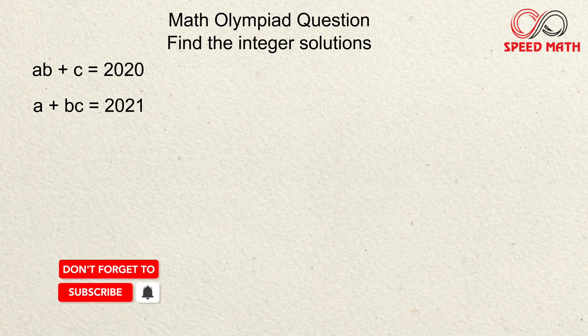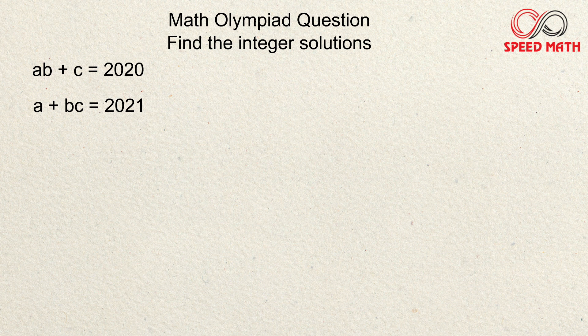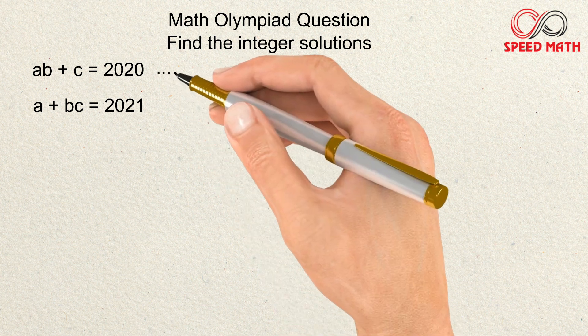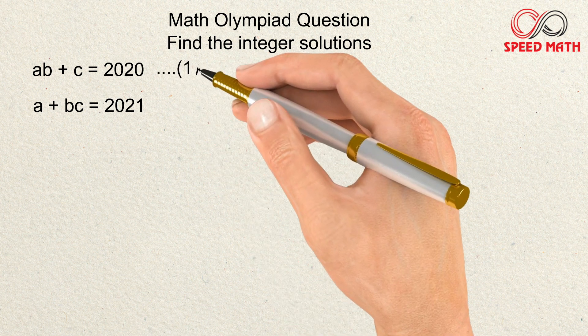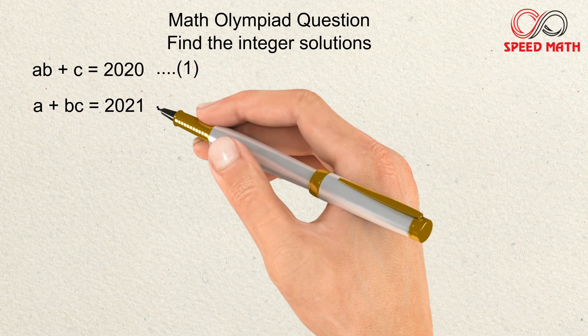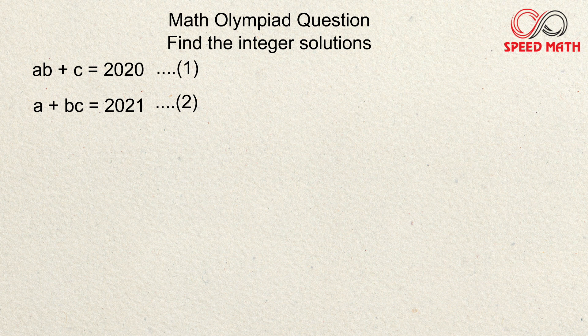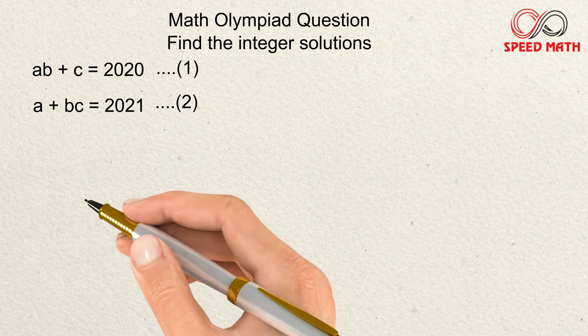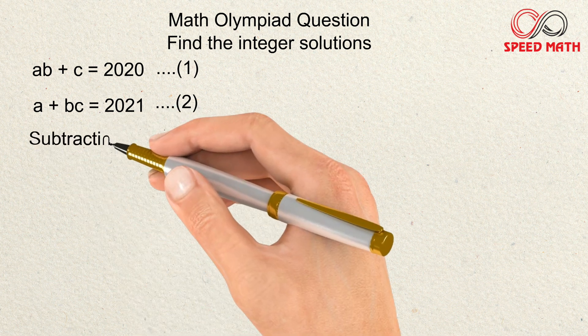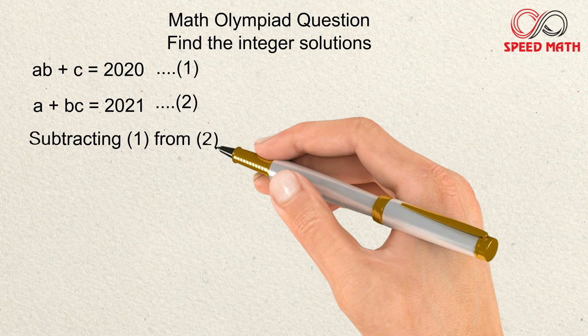We are going to use a linear equation approach. We'll call ab + c = 2020 as equation number one and a + bc = 2021 as equation number two. Now what we are going to do is subtract equation one from equation two.